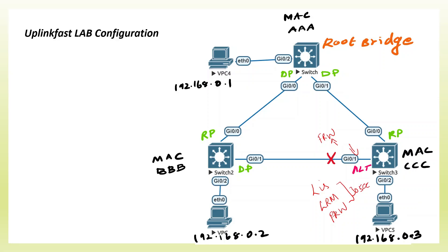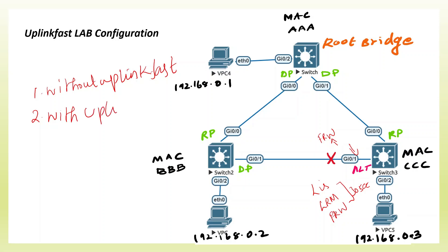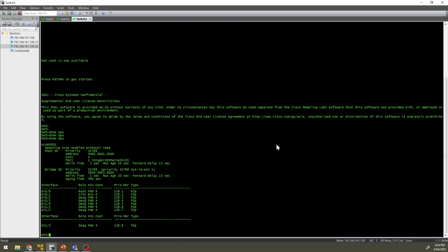If you want to go from blocking to forwarding without UplinkFast, you will need 30 seconds. If you want to avoid this delay and go directly to forwarding, we need to apply UplinkFast. We will first test without applying it, then configure it at a global level.